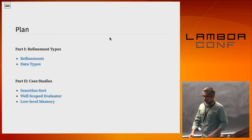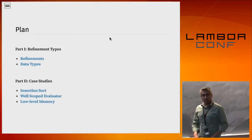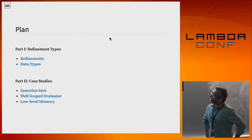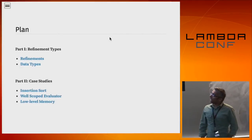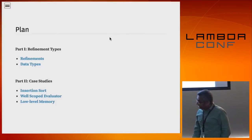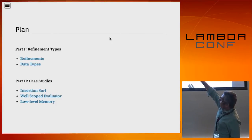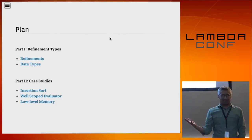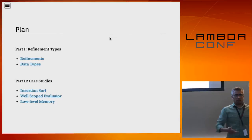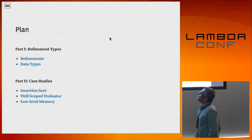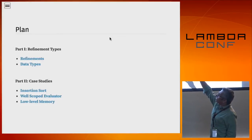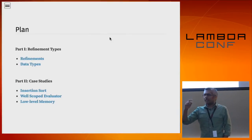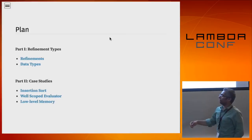First I'll give a very high-level overview of what refinement types are — how does one write a refinement, what does it even mean? Then I'll show simple refinement types for things like integers, then more interesting data structures like lists and maps. Having covered these basics, I'll illustrate how one works with LiquidHaskell through three increasingly more sophisticated examples.